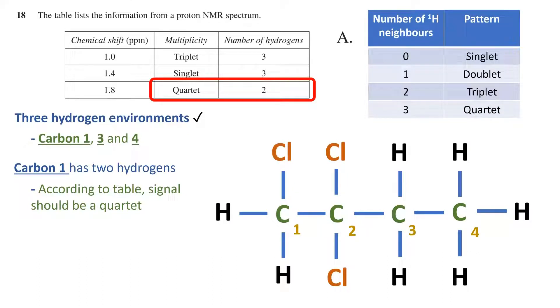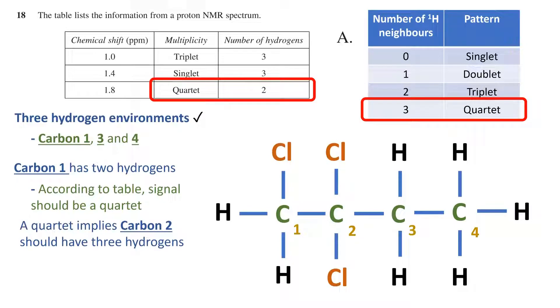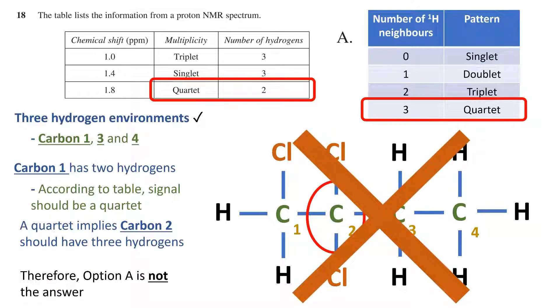Using the table from the previous slide, a quartet implies that the neighboring carbon, carbon 2, should have three hydrogens. As we see here though, carbon 2 only has two chlorines attached and no hydrogens. Therefore, option A cannot be the answer. It doesn't follow the information provided.